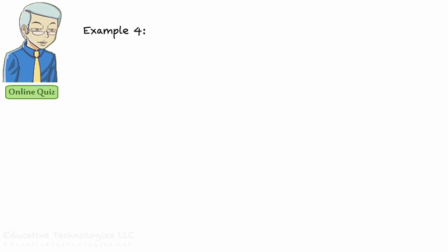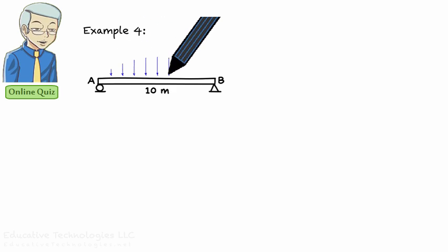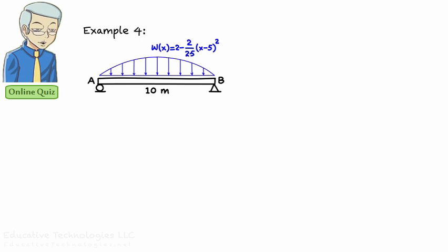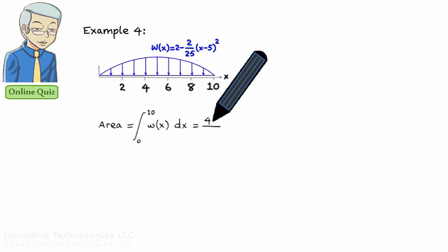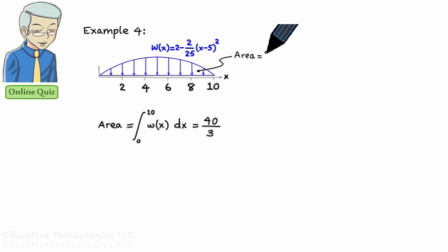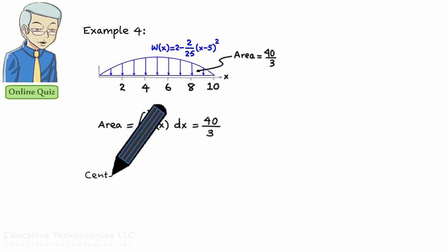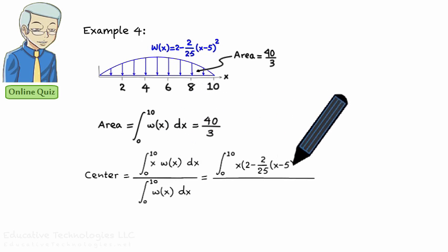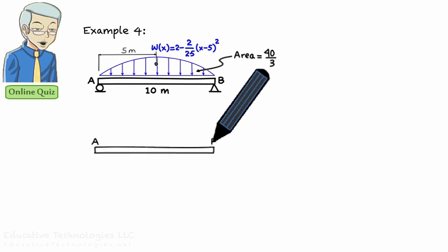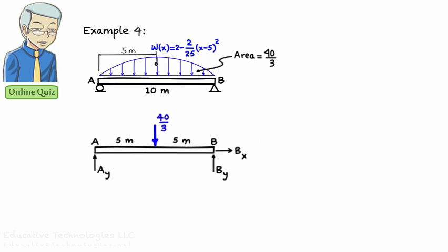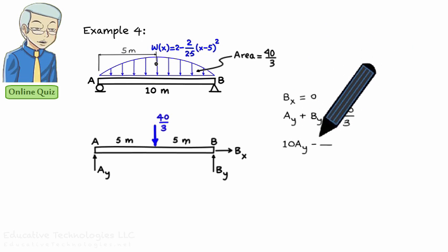Example 4: The beam is subjected to a parabolic load defined by the quadratic equation w(x) = 2 − (2/25)(x − 5)². To find the magnitude of the equivalent concentrated load, we integrate w(x) to determine the area under the curve, which equals 40/3. The location of the equivalent concentrated load is found using the geometric center equation, which places the center 5 meters from point A — the midpoint of the beam. The free body diagram shows the distributed load replaced by its equivalent concentrated load, and the equilibrium equations give the support reactions.